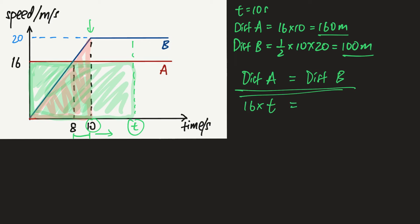This equals to the area under the graph for car B, which is this triangle which we have found earlier, plus the additional rectangle here. So for car B it will be 100 meters which we found from here plus the area of the rectangle which is 20 times the base which is t minus 10, because t is greater than 10. So we will simplify this: 16t equals to 100 plus 20t minus 200. Making t the subject, you'll find that t equals to 25 seconds.